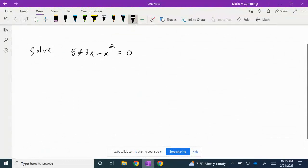I'm going to rearrange this in descending order as -x² + 3x + 5 = 0, because the x² variable is negative. So the first thing I did was put it in descending order.